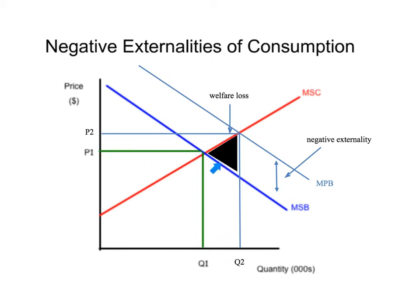There has been a welfare loss as a result of the negative externality — in this case, the consumption of a cigarette. This black triangle is representative of lost welfare as the result of someone smoking a cigarette.